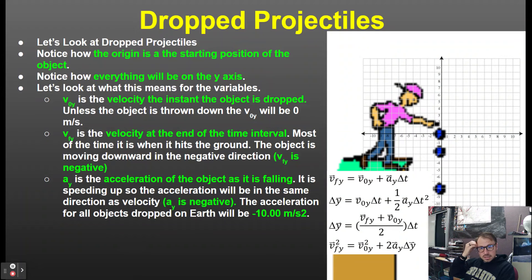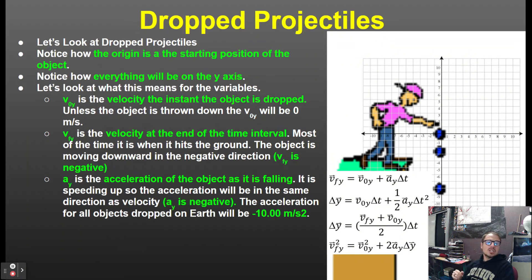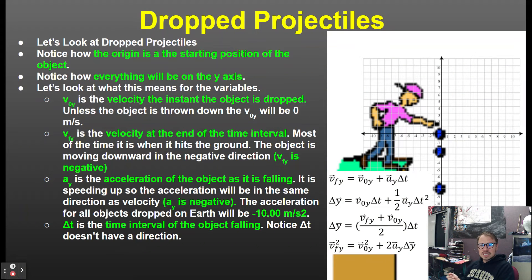The acceleration of the object as it's falling is in the same direction as the velocity, so the acceleration is going to be negative. We're going to use negative 10 meters per second squared. Yes, technically it's negative 9.81 m/s², but using negative 10 makes the math come out a lot easier and is easier to conceptualize.